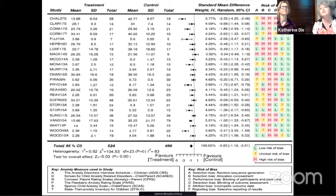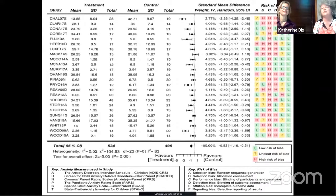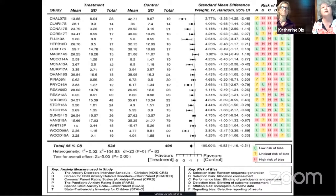We've included the risk of bias down the right-hand side. Risk C, which is performance bias — blinding participants and personnel — is quite standard in these types of studies where it's impossible to blind participants, as they know whether they're involved in the treatment or not. That's unescapable. We preferenced the clinicians' reports in this overall snapshot to give a clear insight into what was going on.